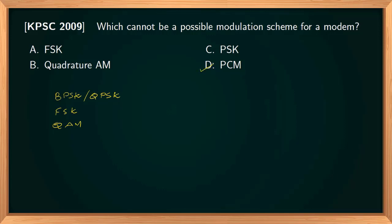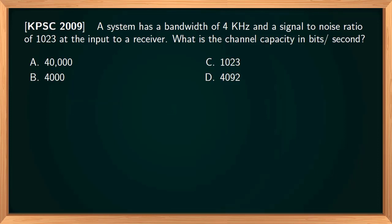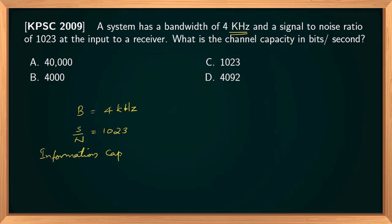So the correct option is PCM. In this question, a system has a bandwidth of 4 kHz and a signal-to-noise ratio of 1023 at the input of the receiver. What is the channel capacity? By the information capacity theorem, capacity C is given by B into log(1 + S/N).